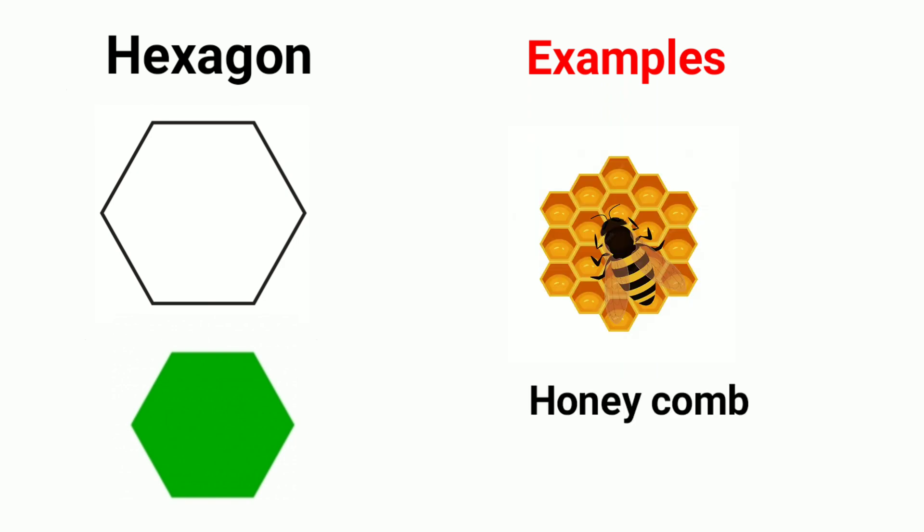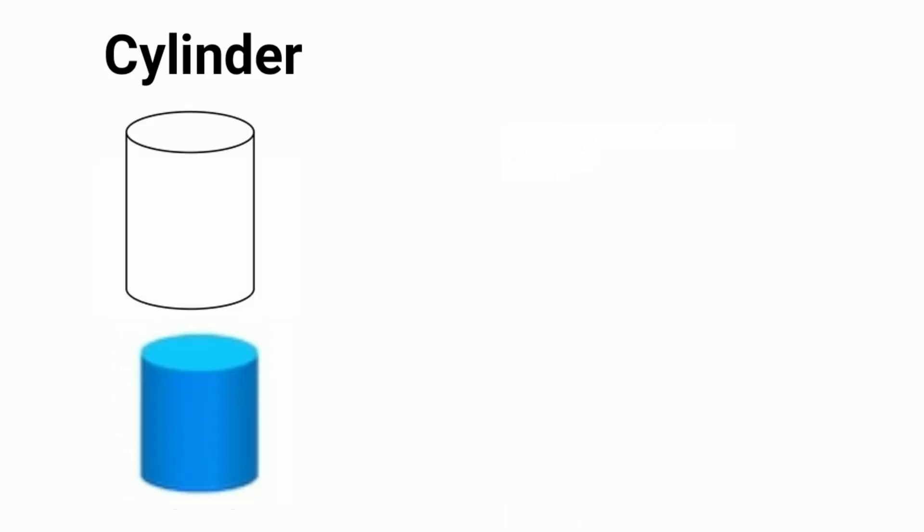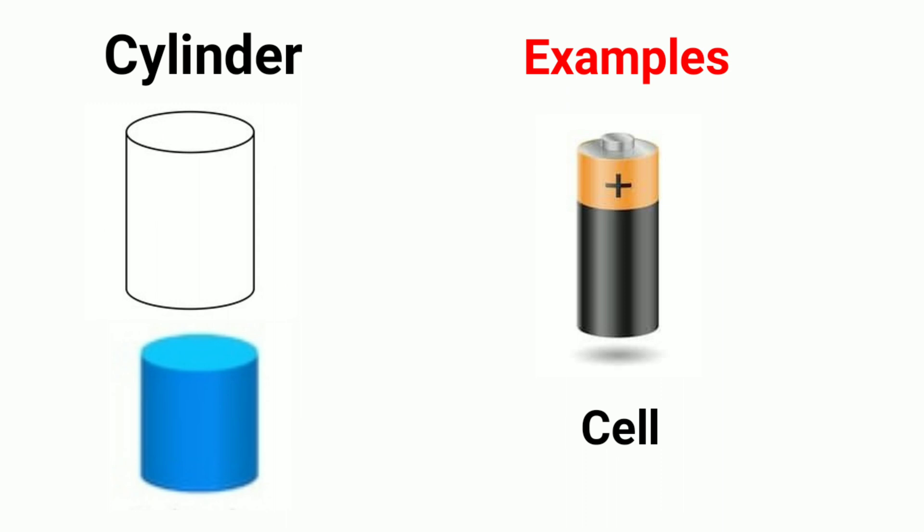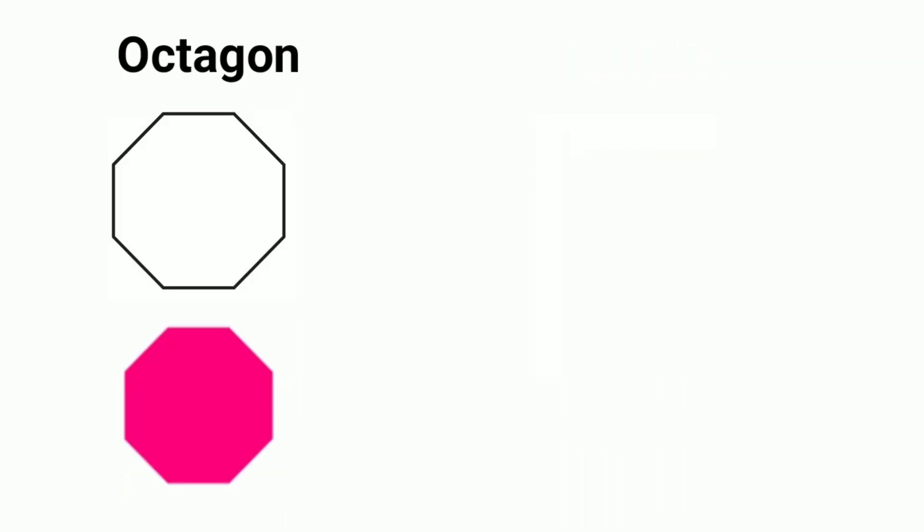Honeycomb. Cylinder. Examples of cylinder shapes: oxygen and hydrogen gas cylinder, cell, candle. Octagon examples.